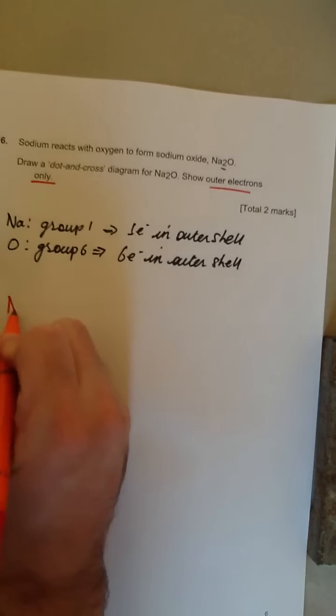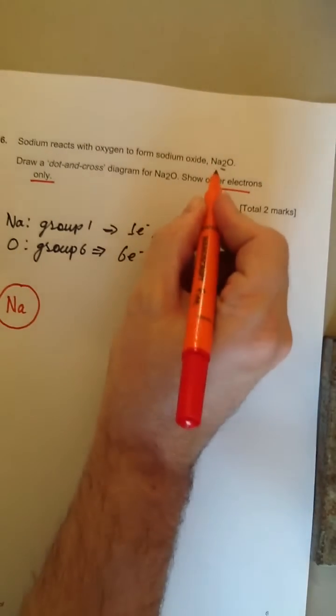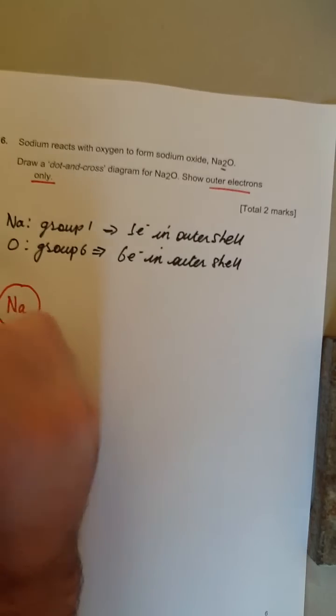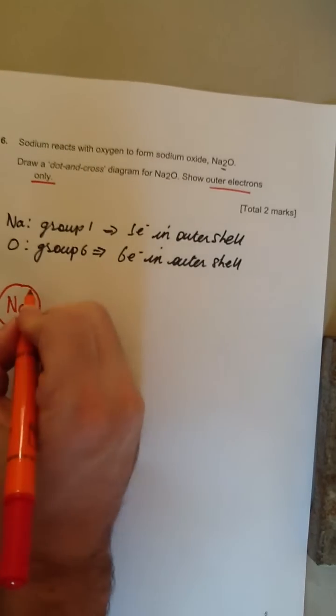The way we show this is, if I draw the sodium in red and the oxygen in blue, we're going to have a sodium. And how many sodiums? We're going to have two.